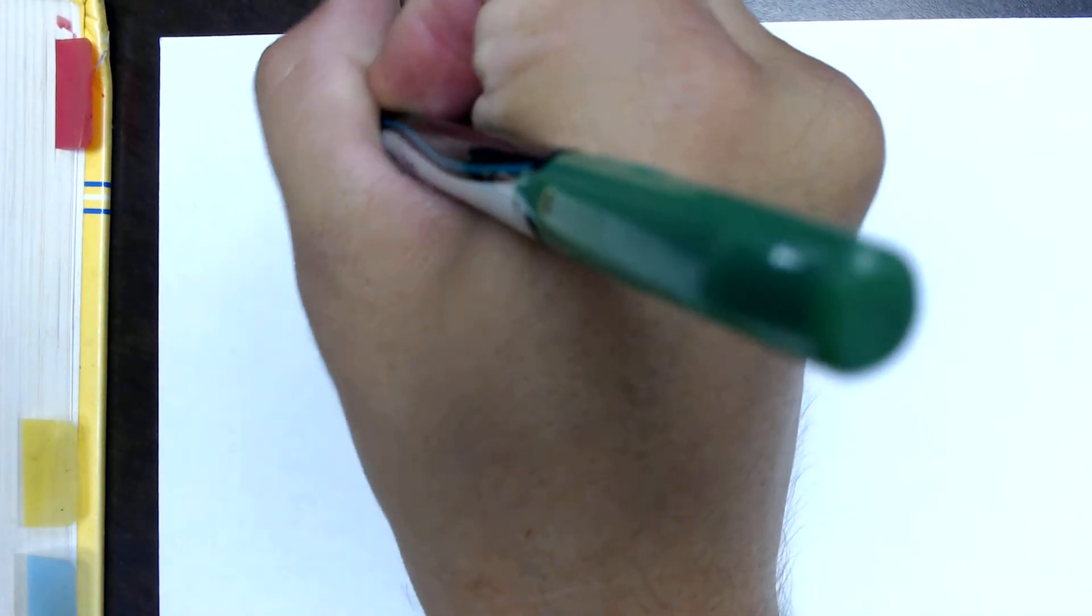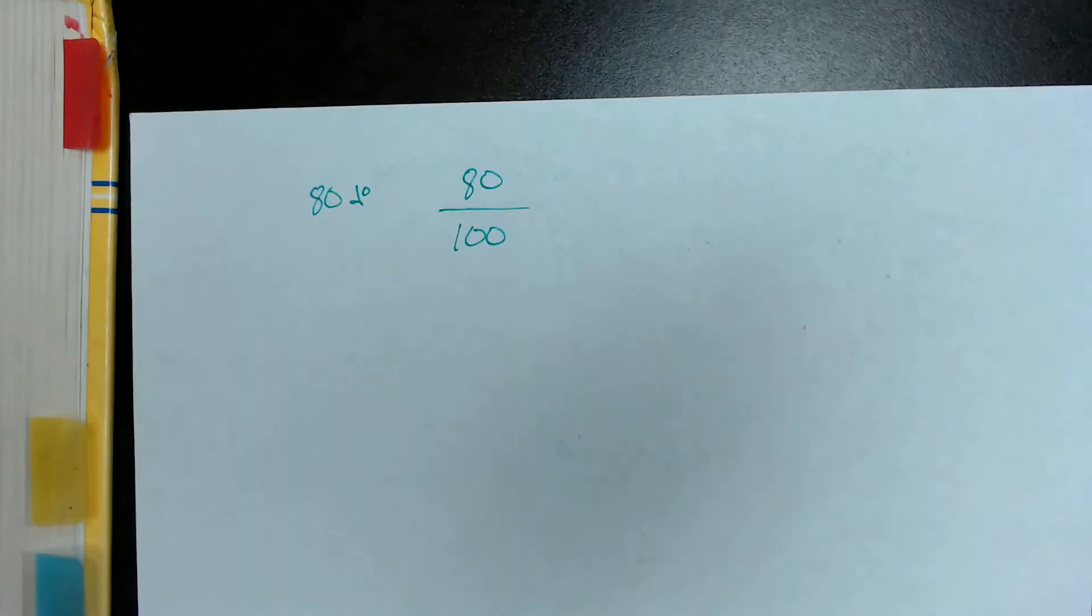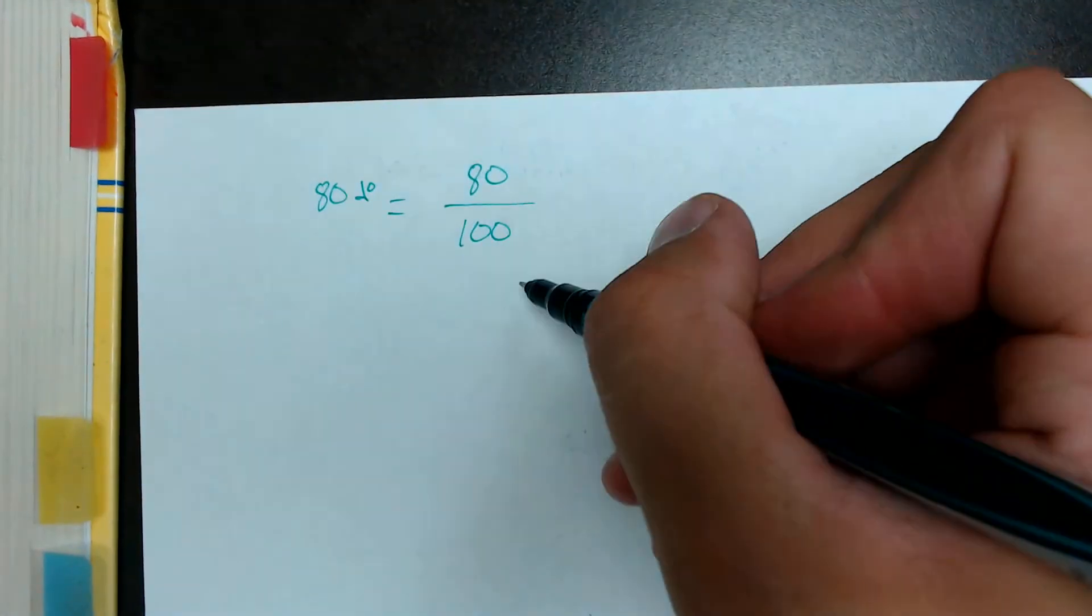So let's say we have the number 80%. The way we're going to turn this into a fraction, and this works for every single percent, even if it's bigger than 100, is we just take that percent and we put it as a numerator over the number 100. So if I take 80%, that is going to be equal to 80 over 100.